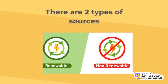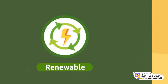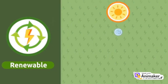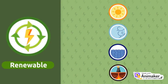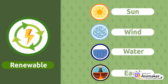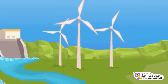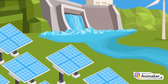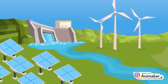We obtain energy from two different sources: renewable energy sources and non-renewable sources. Renewable energy refers to all those limitless energy sources present in nature. The sun, the wind, the force of water, or the inner heat of the earth are examples of renewable energy sources. These energy sources are present in nature and are naturally replenished, that's why they never run out.